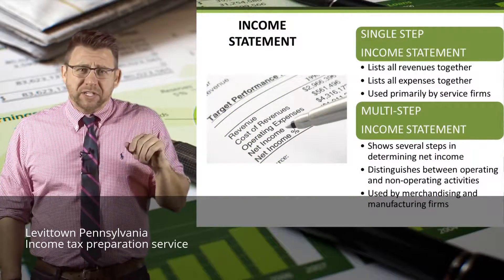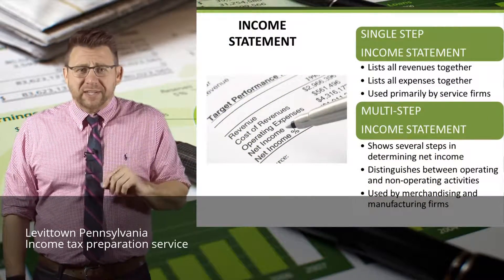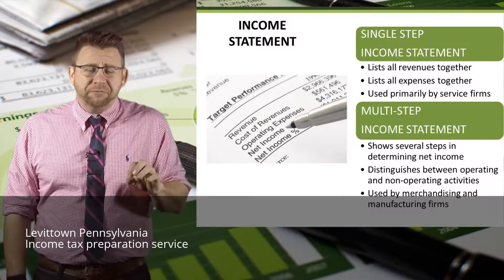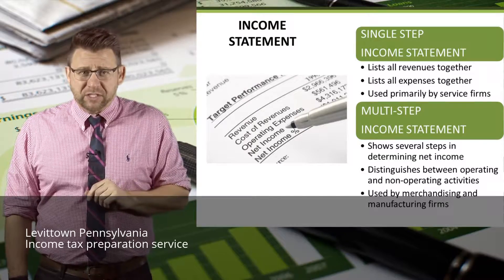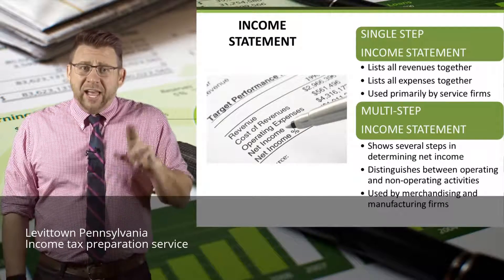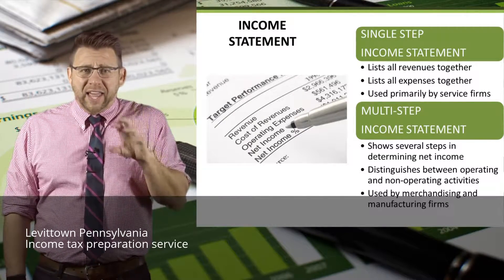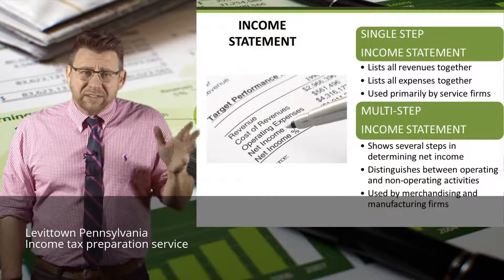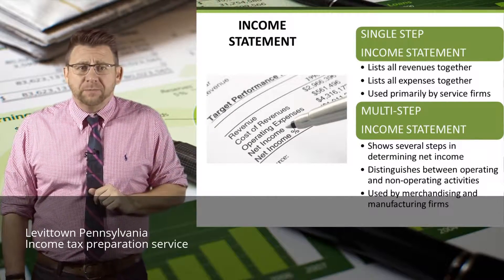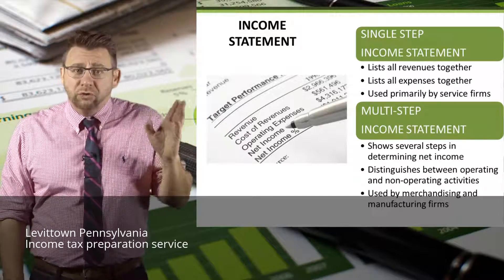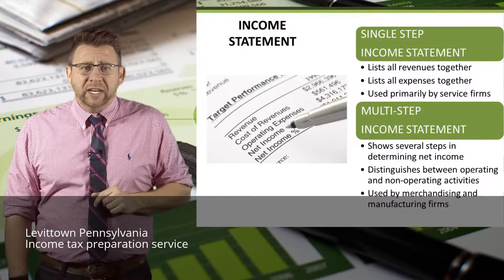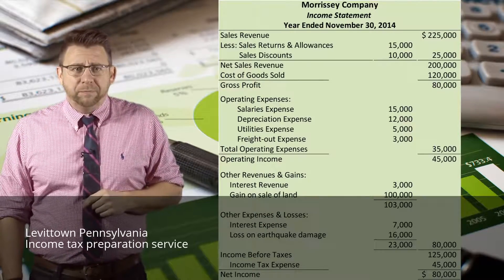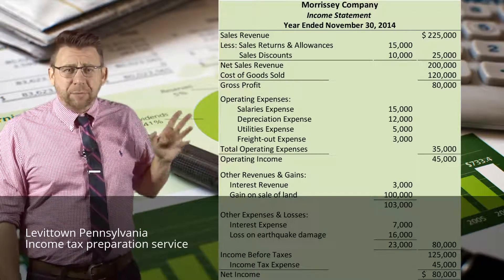A multi-step income statement still lists revenues and expenses, but it separates operating revenues and expenses from non-operating revenues and expenses, and divides the accounts into important subtotals that highlight areas of importance for investors and creditors. The subtotals include gross profit and operating income. Here is an example of the multi-step income statement — you can see the different subtotals listed.